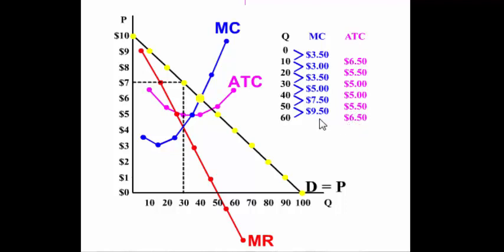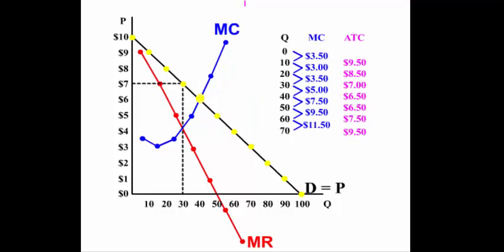Let's see if this holds true when the monopolist is earning a profit. We'll put in an average total cost curve where there's a profit. Notice that allocative efficiency still takes place at P equals MC, and the monopolist is still allocatively inefficient even when earning a profit.